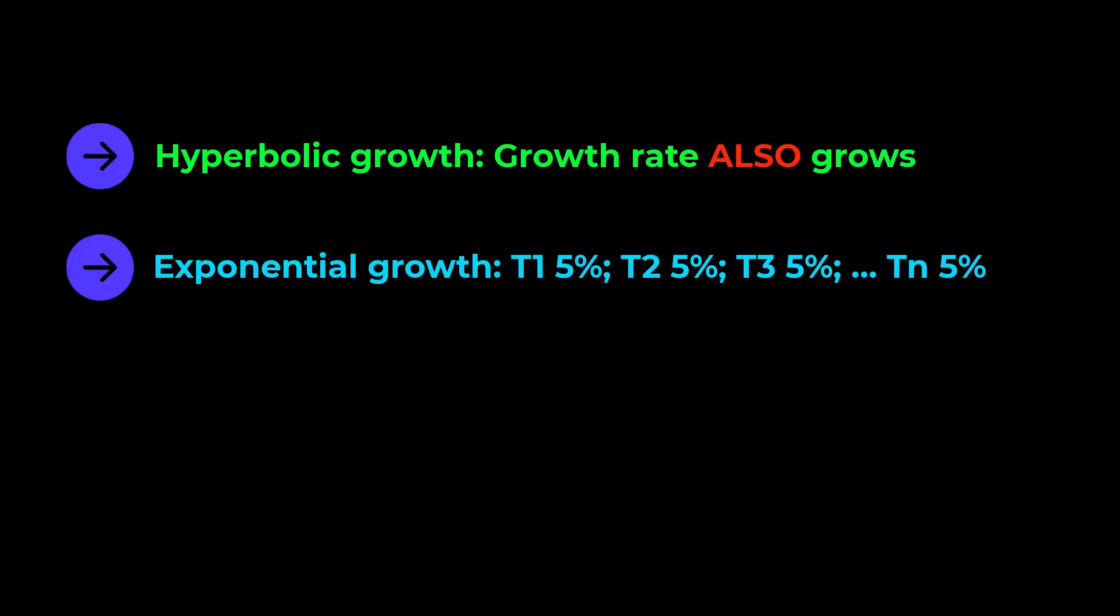In hyperbolic growth, the amount of feedback also grows with time. In 5% exponential growth, the investment grows at 5% per period across the whole timeline.